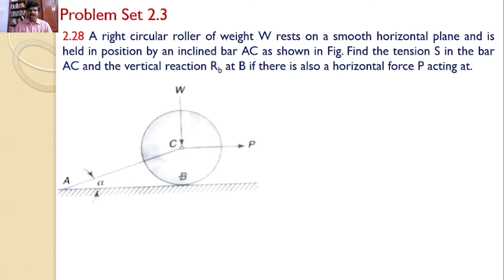A right circular roller of weight W is resting on a horizontal surface. It is held by a string AC. A horizontal force P is also acting on it. Our interest is to find the reaction force developed at B and the tensile force developed in the string S.